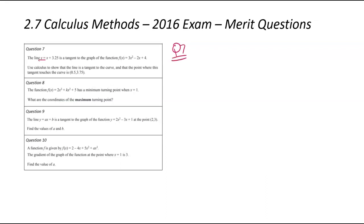We've been given a line which is a tangent of the function, and we've got the equation over there. We've been asked to use calculus to show — when they say that word 'show', it means they've given you the answer and you've got to prove it — that the line is tangent to the curve and that the tangent touches at that coordinate. So I'll start off by writing down the equation of the tangent because there's a bit of hidden information in there.